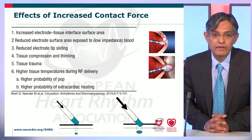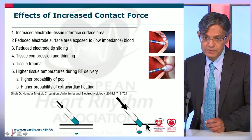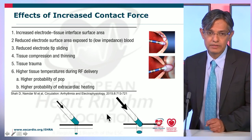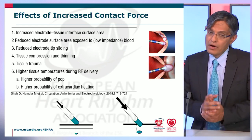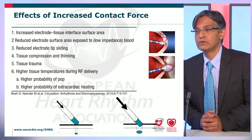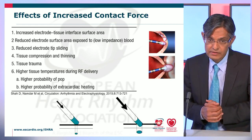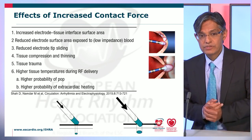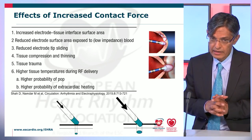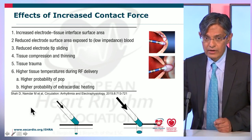To summarize the effects of increased contact force: increased electrode-tissue interface surface area as the electrode gets buried into soft atrial or ventricular myocardial tissue; reduced electrode surface area exposed to low-impedance blood; reduced electrode tip sliding in response to respiratory and cardiac movement; tissue compression and thinning; tissue trauma; higher tissue temperatures during RF delivery; and therefore a higher probability of steam pop and extra-cardiac heating.